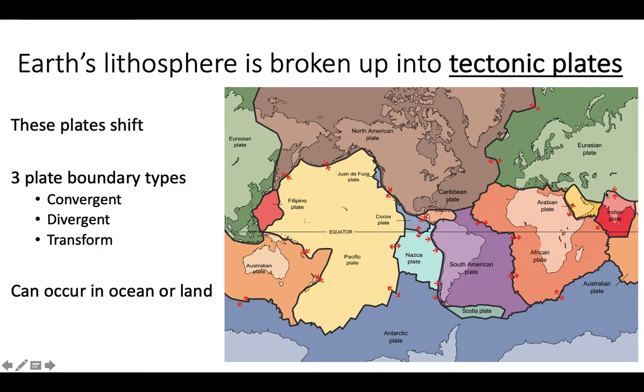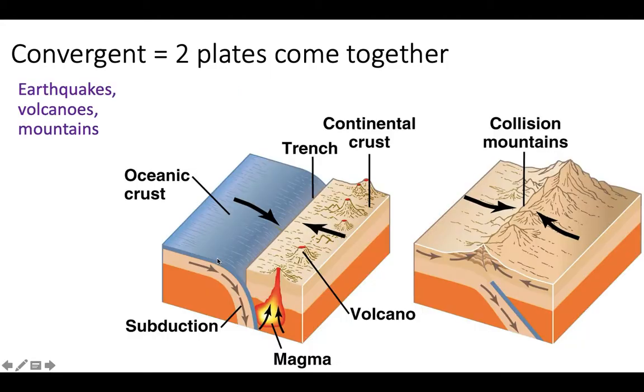There are some examples here, like in the Himalayas, right? And so there are actually a variety of different outcomes of these plates. First, let's talk about convergent plates, where two plates smash together. And these can lead to earthquakes, volcanoes, and mountain range formings.